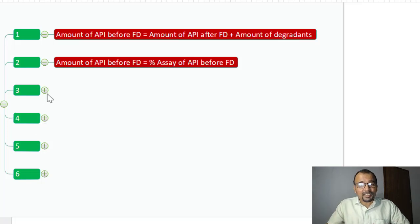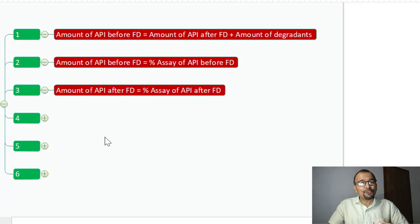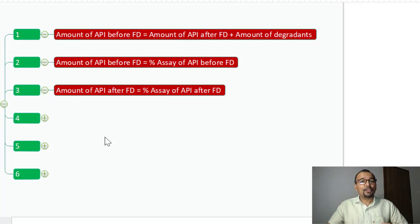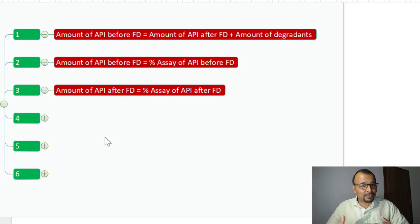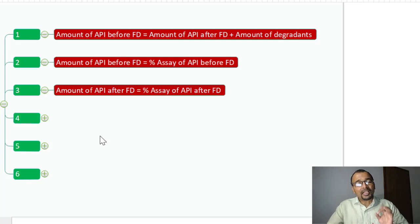What about the amount of API after force degradation? Again, you need to conduct the assay of the degraded sample. As the sample has undergone the degradation study, you must have measured the impurities in it. Similarly, the same sample must also be analyzed for the assay of the API. Again there are two approaches: either use the validated assay method, or use the related substances method by increasing the concentration to a suitable level. This will give you the assay of your API in the degraded sample.